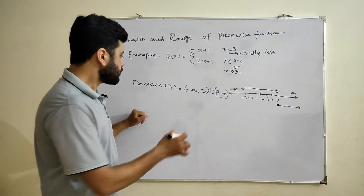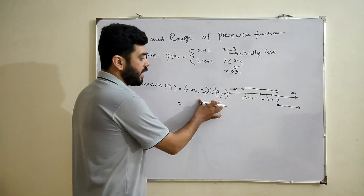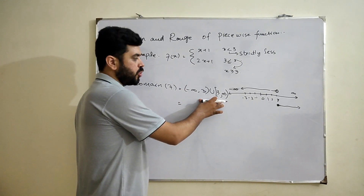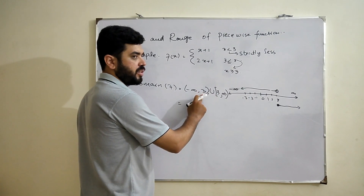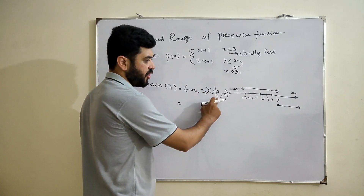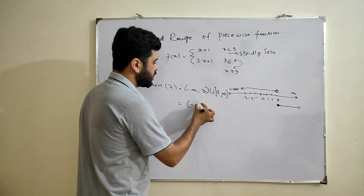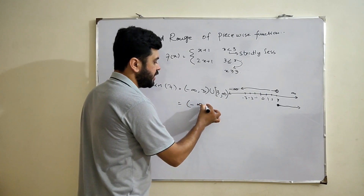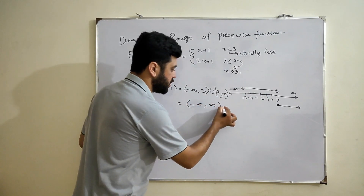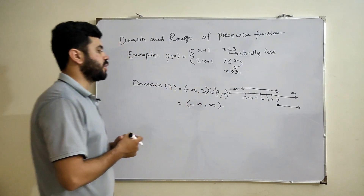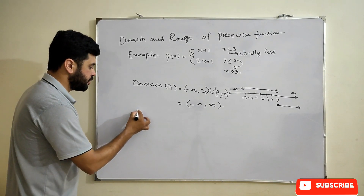Since there is a union and 3 is not included in the first part but is included in the second part, we can write the overall domain as negative infinity to positive infinity — that is, all real numbers. Now let's find the range.